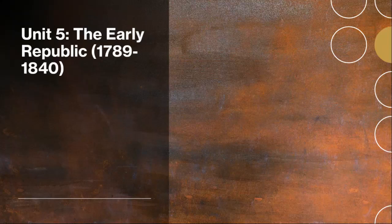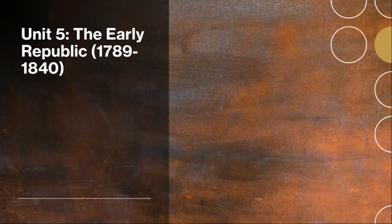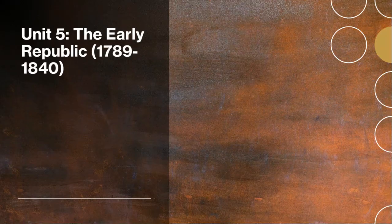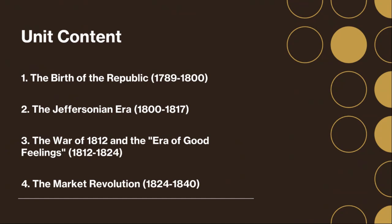Welcome to Unit 5, U.S. History, titled The Early Republic, which takes place during the late 18th century and into the mid-19th century. In this unit, we will delve into the Early Republic period in United States history, spanning from 1789 to 1840. This crucial era witnessed the formation of a young nation, its struggles, triumphs, and the establishment of key institutions that continue to shape the United States today.